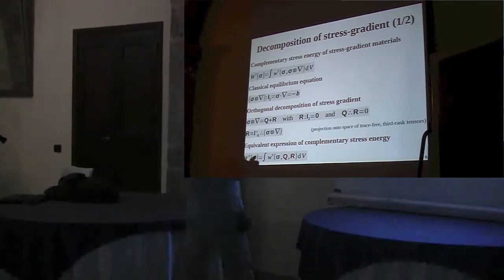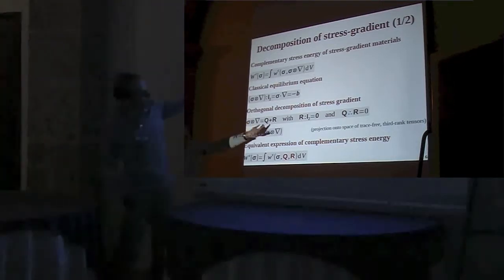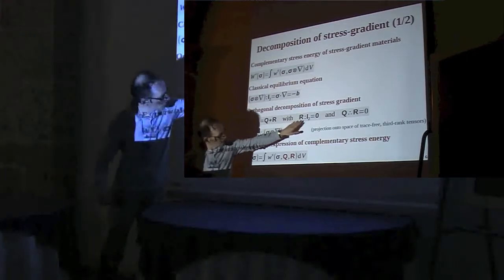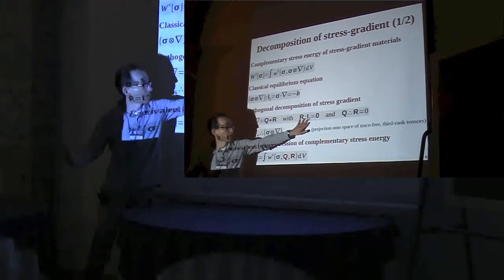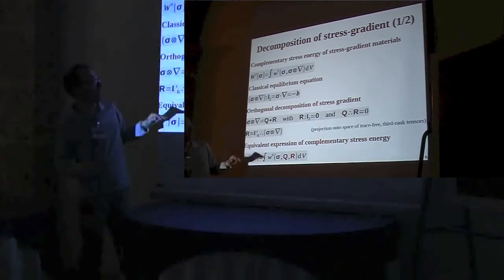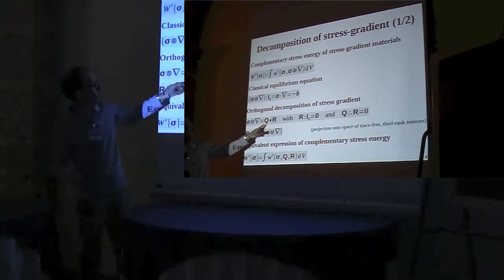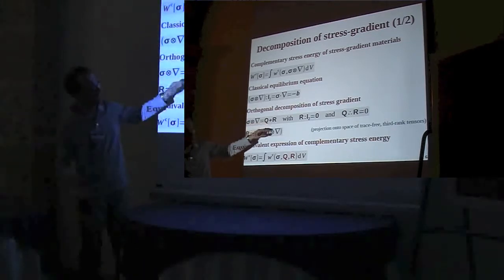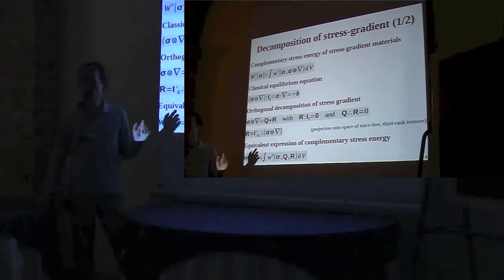It now makes sense to introduce a decomposition of the stress gradient into two parts: R, which is trace-free and independent of the equilibrium, and the complementary part Q, which is fully governed by the equilibrium equation. The sum of those two components gives the full stress gradient. This decomposition is made unique by imposing orthogonality.